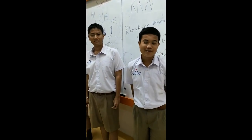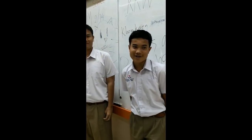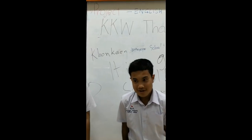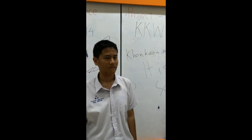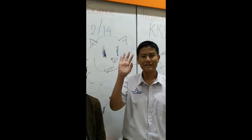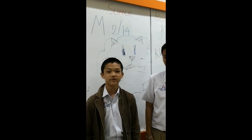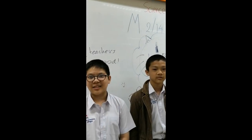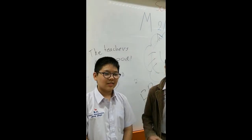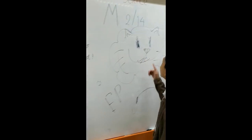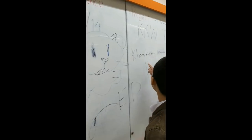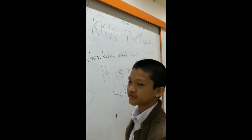Hello everybody. Today we are going to talk about why the sky is blue. I am Ross. I am Ching. I am Leo. I am Chi. We study in the Hongkane VTIO school in Thailand, in the city of Hongkane.